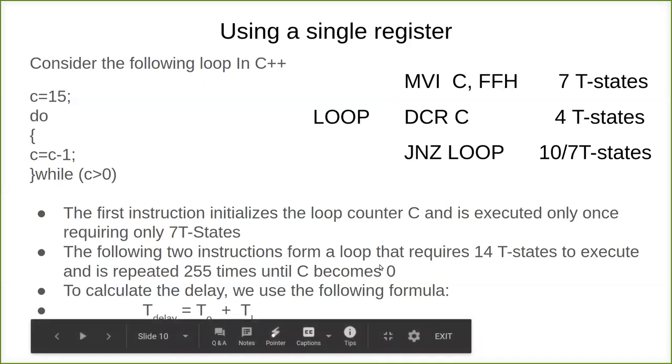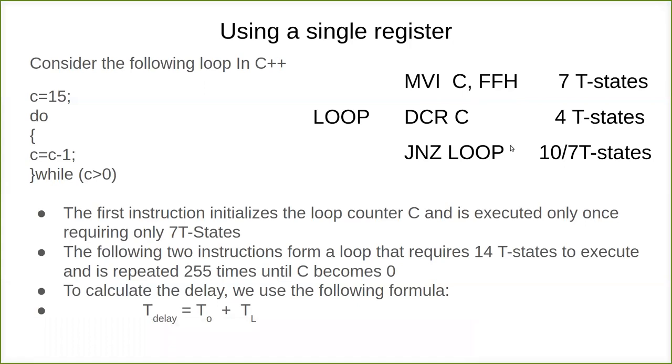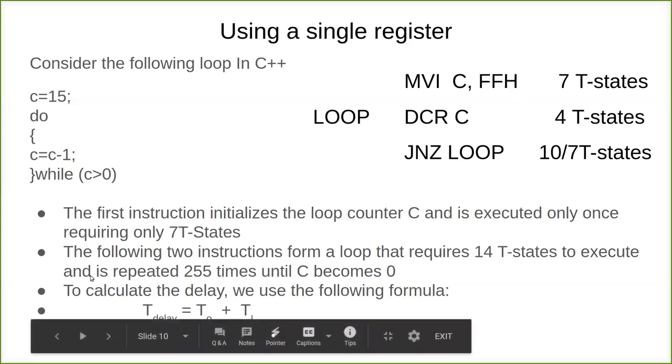The following two instructions form a loop that requires 14 T-states: 10 plus 4. These 14 T-states are executed and repeated 255 times. FFH is 0 to 255, so 255 times until C becomes 0. When it becomes 0, it comes out.